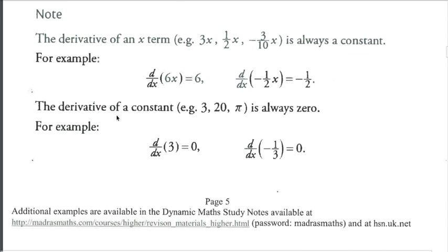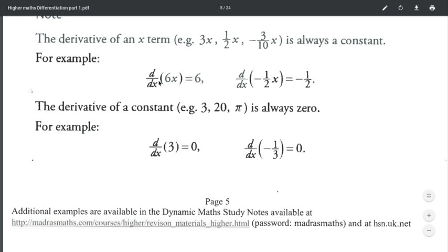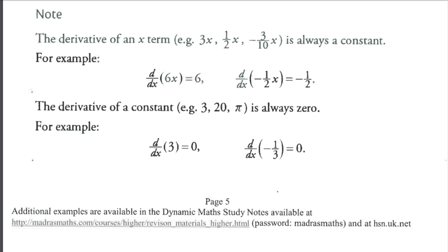And this is just a note of what I said on the previous page. If you differentiate any term followed by an x, you will just get that term. So if I differentiate 6x, we get 6. Differentiate negative 1 half x, we get negative 1 half. And if we differentiate any constant or number term, we will always get a 0.